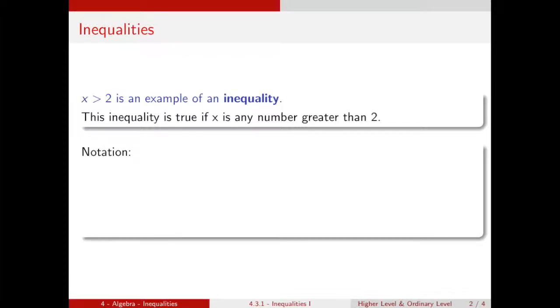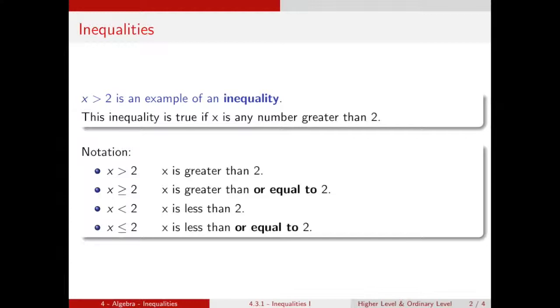Let's look at some more notation we use. We've just seen this means that x is greater than 2. This means that x is greater than or equal to 2. So x could be 3, x could be 5, x can also be 2 in this case. This means x is less than 2, so it's some number less than 2. And this means that x is less than or equal to 2.